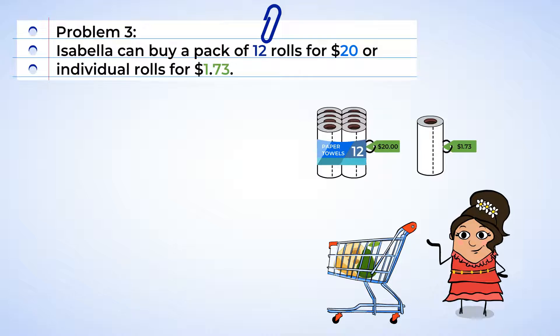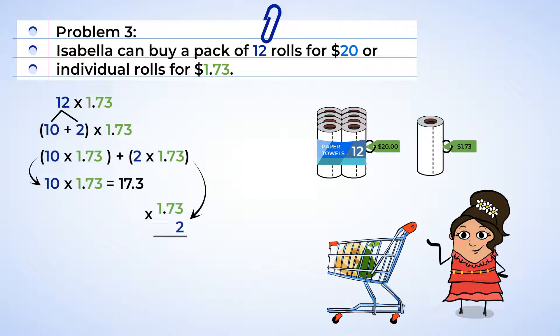Okay, we're going to start by multiplying 12 by 1 and 73 hundredths. Well, let's break up 12 into 10 plus 2. So we're going to multiply 10 by 1 and 73 hundredths. Now keep in mind the shortcut for multiplying by tens. We can move the decimal place over to the right and get 17 and 3 tenths. Ah, perfect. Now, 2 times 1 and 73 hundredths. Now let's set it up. 2 times 3 is 6. And 2 times 7 is 14. Place the 4, carry the 1. 2 times 1 is 2, plus the carried over 1 is 3.